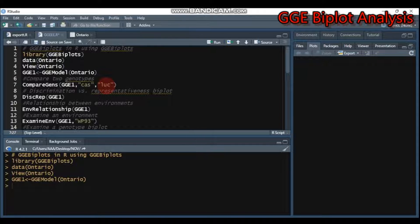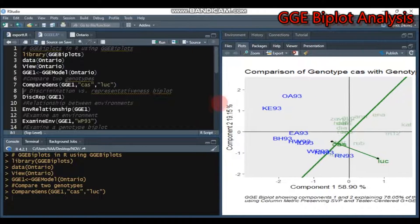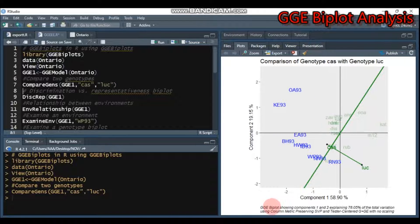You select the two genotypes, CAST and LUC, that we want to compare. Type this and submit to R Studio, and this graph will be displayed. There are footnotes showing component one indicates principal component one, and 58.9% of observation falls in component one, while 19.15% falls in principal component two.